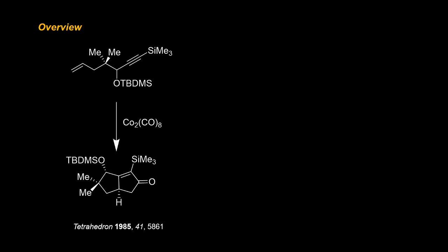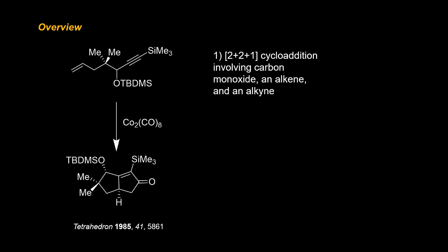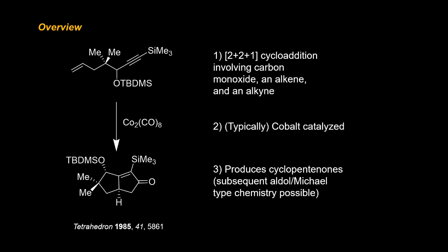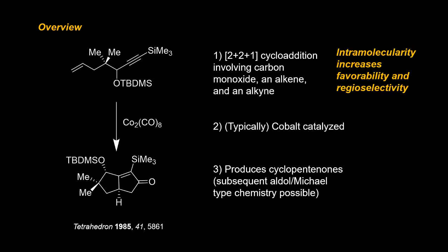In terms of the overall reaction, the intramolecular Pauson-Khand is naturally identical to the intermolecular version. It's still a 2+2+1 cobalt-catalyzed cycloaddition that produces cyclopentanones. This time, however, we will get two rings, with the second ring size being variable based on our starting material. The intramolecular reaction has the benefits of increased regioselectivity as a result of extremely limited bonding options, and greater favorability as a result of the reactive segments being in much closer proximity.